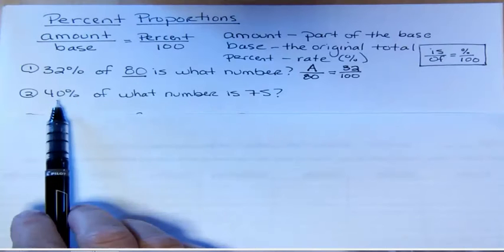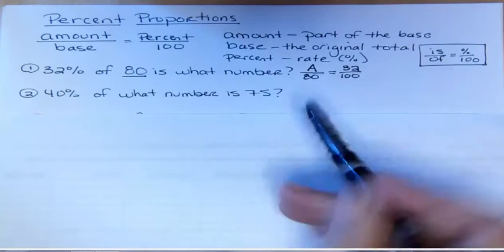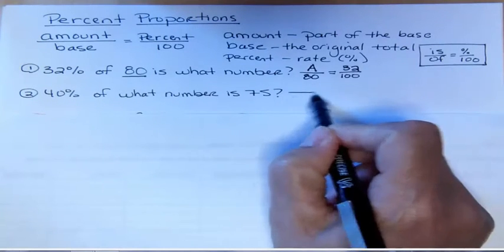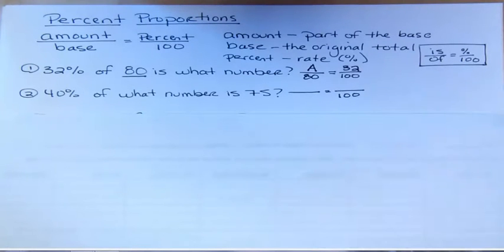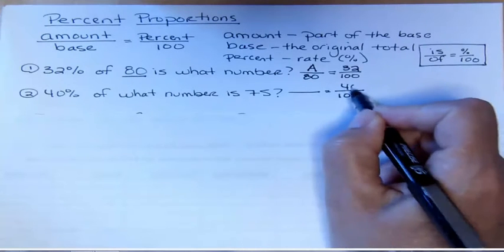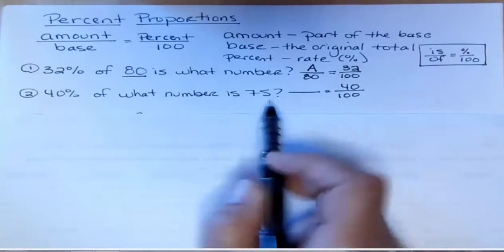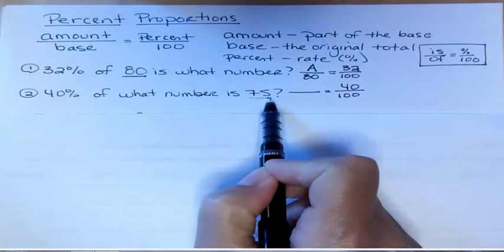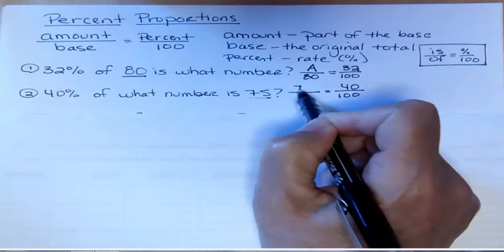Let's set the next one up. 40 percent of what number is 75. Again, we know the bottom right number is 100 because that's the percent proportion. Then we look for the percent symbol—that's 40, so that goes there. You don't change it, leave it exactly how you see it. 'Of what number is 75'—the 'is' is associated with 75, and 'is' is the amount. So in this case we know that 75 is the amount and we don't know what the base is.